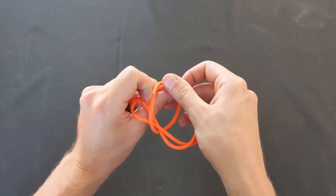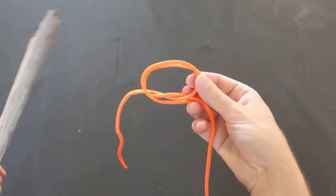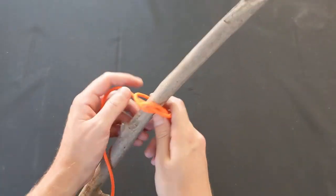Bring the left loop around the bottom and align it with the right loop. This creates the form of the constrictor knot. Just slide this structure onto the object you want to constrict, and pull both ends to tighten.